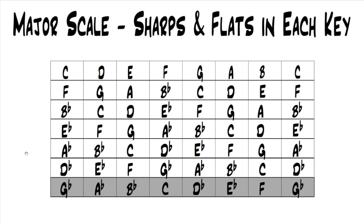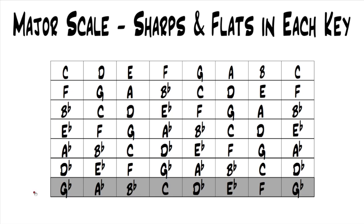F is just going in alphabetical order: F, G, A, B, C, D, E, F — with the flat on the B. Then you take the fourth of F, which becomes your new key with two flats. You add the flat on the fourth note, and you always keep the flat from the last one, so you have B flat and E flat. You can do that through all the keys and it works out. I noticed I forgot to add a flat on the C flat for the key of G flat — I'll fix that for the e-guide.